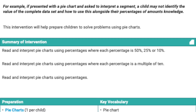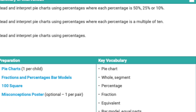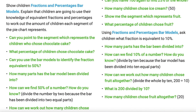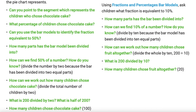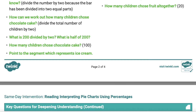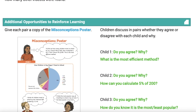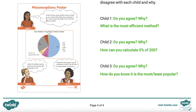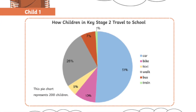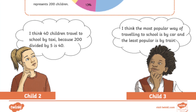You can see an overview of the intervention, the resources you need to prepare and key vocabulary to use. For each step of the intervention there are questions to ask the children, enabling them to practice key skills and giving you the opportunity to address misconceptions. If there is time, children can complete an additional opportunity to reinforce learning, here discussing the questions on the misconceptions poster. This will demonstrate whether children have fully understood the concept addressed in this intervention.